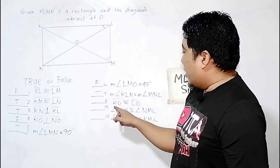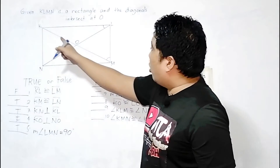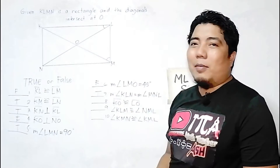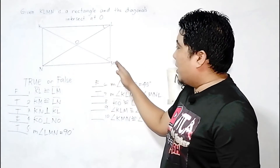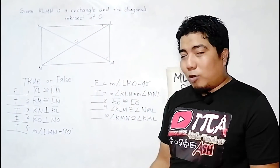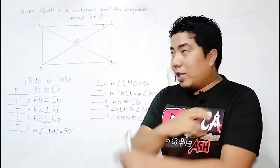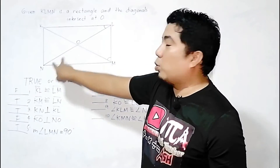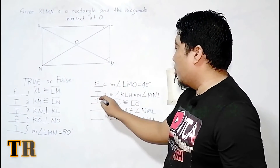Statement 8: Line segment KO is congruent to line segment LO. Since the two diagonals of a rectangle are congruent and they bisect each other, all four segments formed — KO, LO, and the others — are congruent. Therefore, this statement is true.